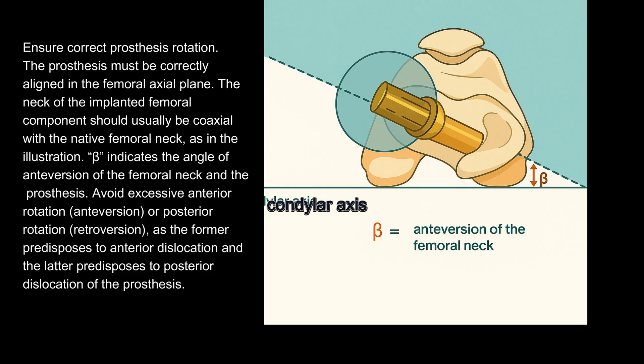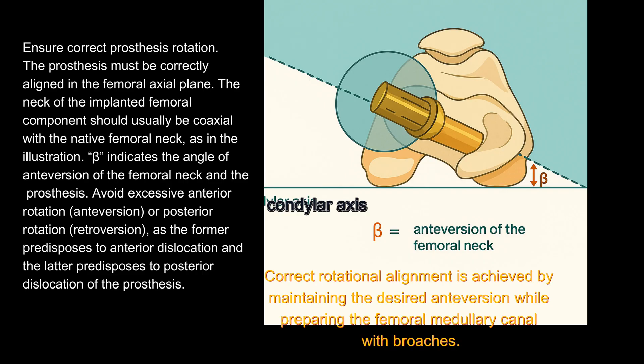Avoid excessive anterior rotation (antiversion) or posterior rotation (retroversion), as the former predisposes to anterior dislocation and the latter predisposes to posterior dislocation of the prosthesis. Correct rotational alignment is achieved by maintaining the desired antiversion while preparing the femoral medullary canal with broaches.